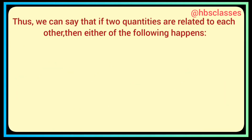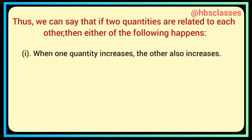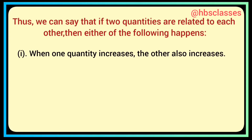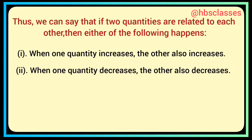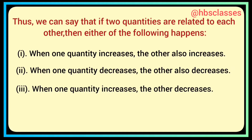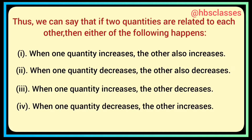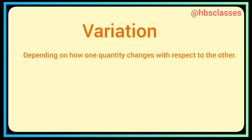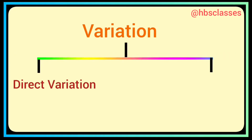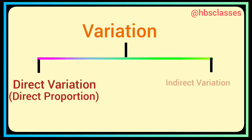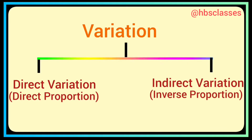Thus, if two quantities are related to each other, either of the following happens: when one quantity increases the other also increases; when one quantity decreases the other also decreases; when one quantity increases the other decreases; or when one quantity decreases the other increases. There are two types of variation: direct variation or direct proportion, and indirect or inverse variation or inverse proportion.